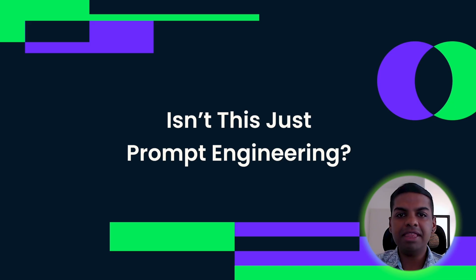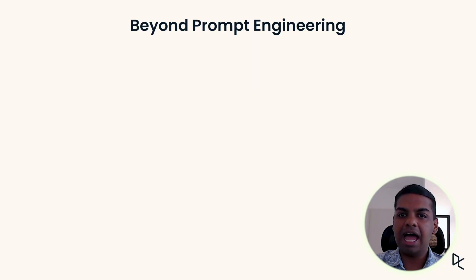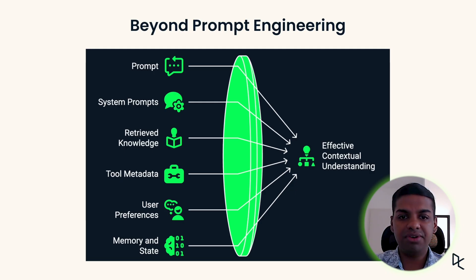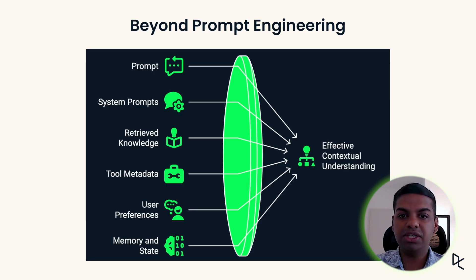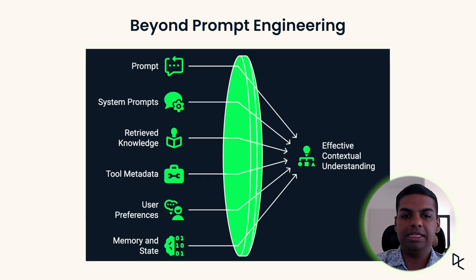When we think about interacting with AI models, we usually just think about prompts — what we type into the chat box. But prompts are only one part of it. The model is also shaped by system instructions, memory, retrieved knowledge, tool information and personal preferences. All of these work together to create effective contextual understanding. Prompt engineering is essentially one part of a bigger puzzle, which is context engineering.